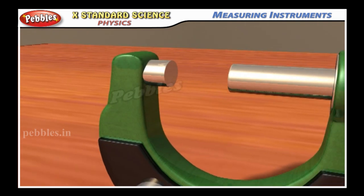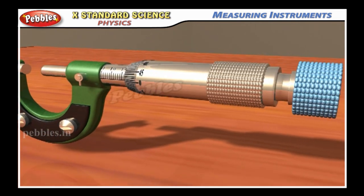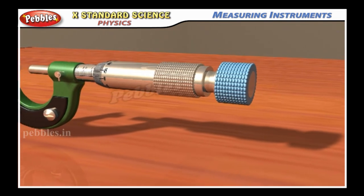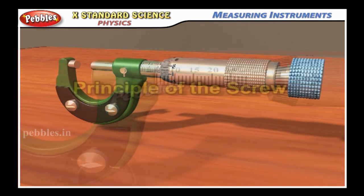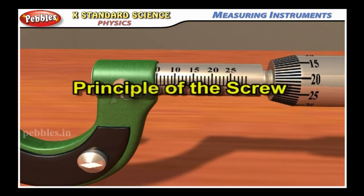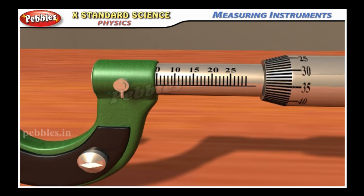A screw head is provided with a ratchet arrangement, a safety device to prevent the user from exerting undue pressure. The screw gauge works under the principle of the screw.